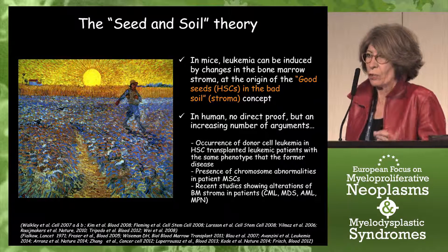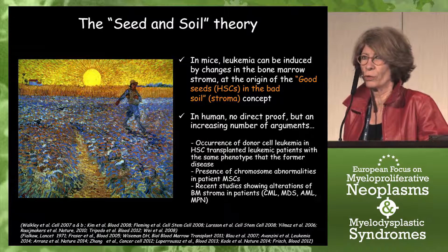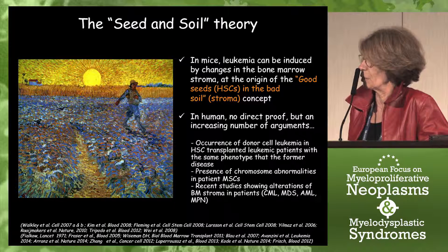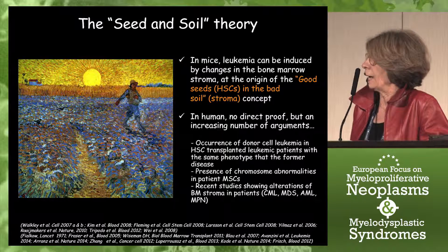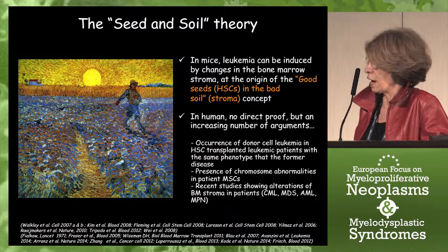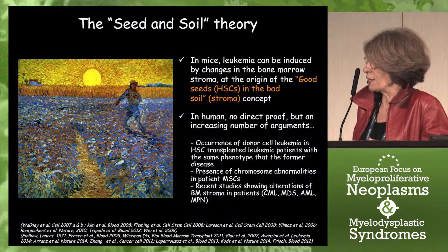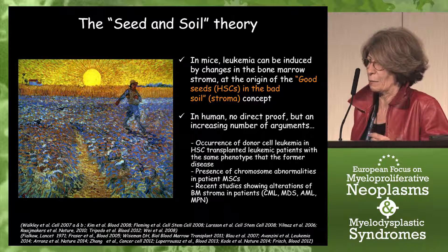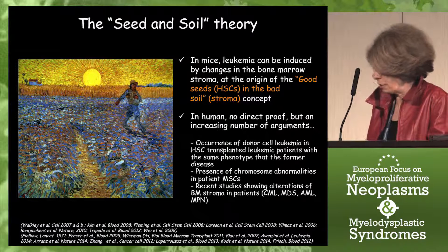The regulation within the hematopoietic niches must be very tightly controlled, since an imbalance could lead to alteration of hematopoiesis and especially leukemia. In mice, it has been demonstrated that leukemia can be induced by changes within the microenvironment without any alteration of hematopoietic progenitors — the origin of the 'good seed in a bad soil' concept. In humans, there is no direct proof, but there are increasing arguments, including the occurrence of donor cell leukemia, chromosomal abnormalities in mesenchymal stem cells, and recent studies showing alteration of the stroma in patients with CML, MDS, AML, and myeloproliferative disorders.